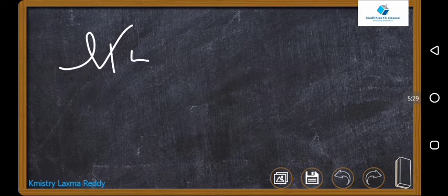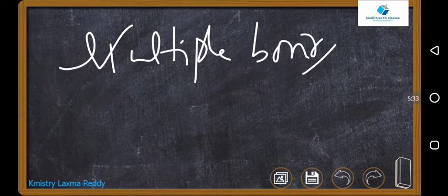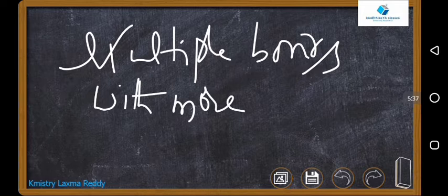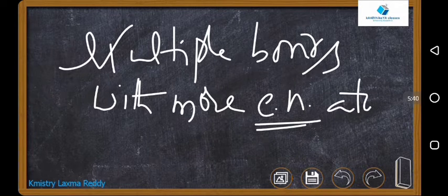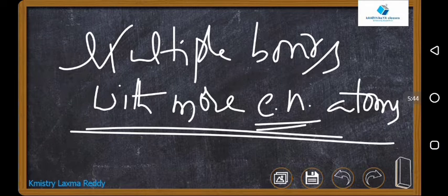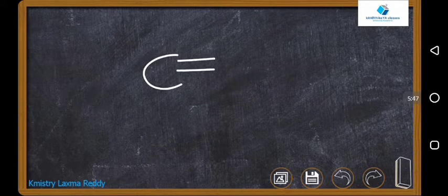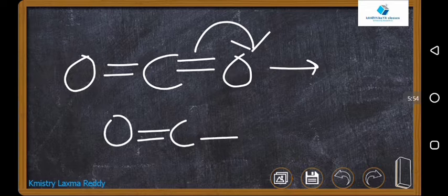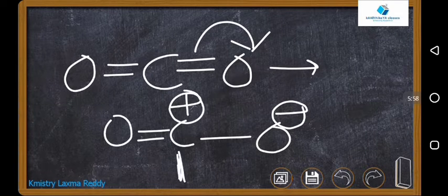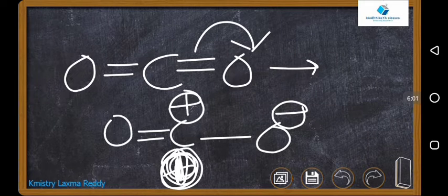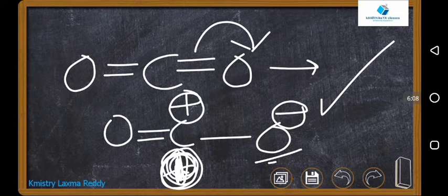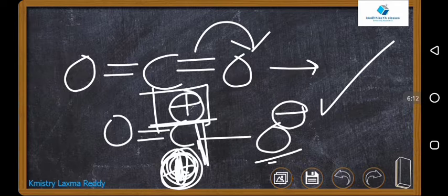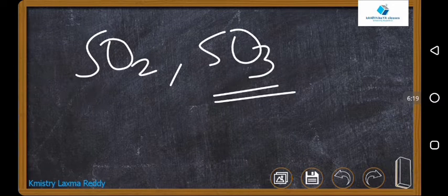Along with these, multiple bonds with more electronegative atoms are important. For example, in carbon dioxide, the electron pair shifts so that oxygen gets a negative charge and carbon gets a positive charge. Carbon with a positive charge is the electrophilic site, because more electronegative oxygen can stabilize negative charge, but carbon with a positive charge is unstable and therefore electrophilic. Similar examples are SO2 and SO3.